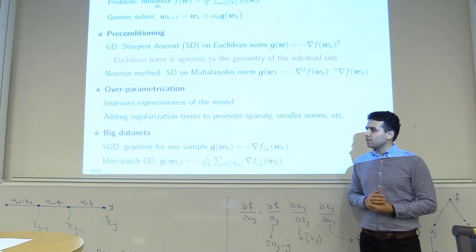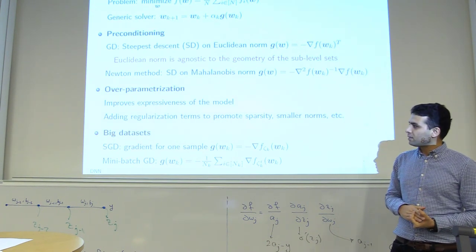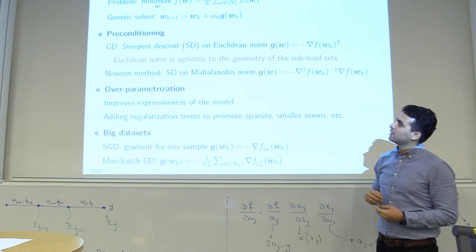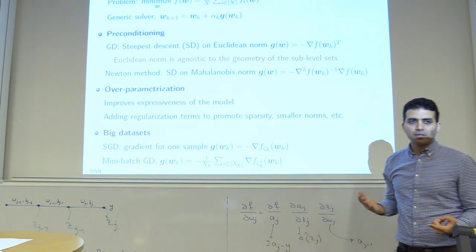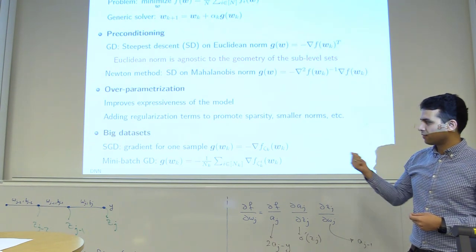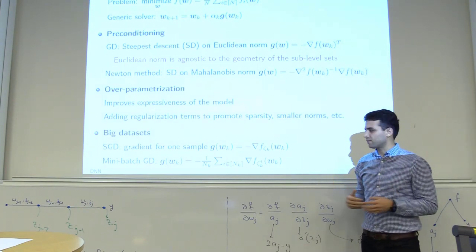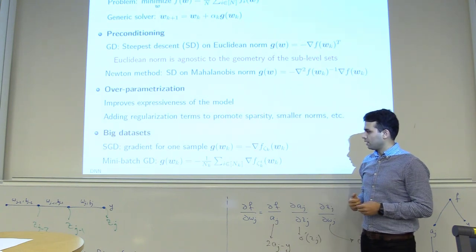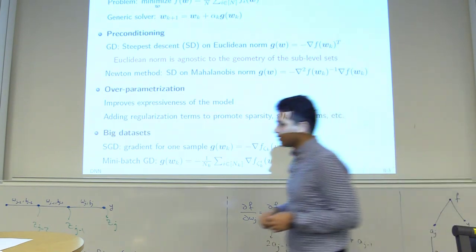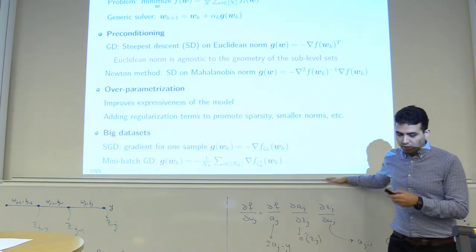In the smooth convex setting with big datasets, computing the gradient is challenging if you need to evaluate it over millions or billions of samples. In that case, we use stochastic gradient descent or mini-batch gradient descent, where you take a mini-batch of size n_k at iteration k and approximate the gradient with a Monte Carlo approximation. We're going to need all of these things in deep neural networks.